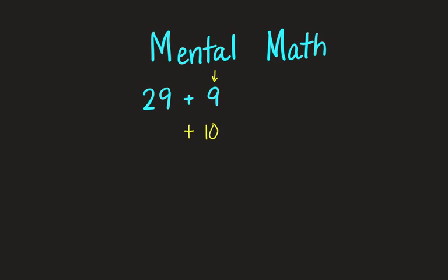So using this strategy, I would do 29 plus ten, which equals 39. Only the tens place is going to change. And then I'm going to subtract one because I was really adding the nine, not ten. Thirty-nine minus one is thirty-eight.